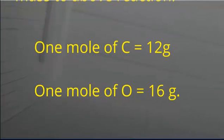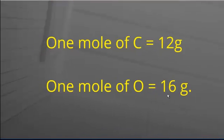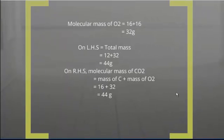On the left hand side, we have carbon and oxygen. We know that one mole of carbon is equivalent to 12 grams and one mole of oxygen is equal to 16 grams. But here we have two oxygen atoms. Hence, the molecular mass of oxygen can be given as 16 plus 16. Hence, the total molecular mass of oxygen is 32 grams.